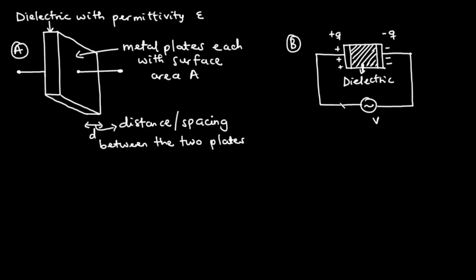In the second diagram, we have a time-variant voltage source connected across a capacitor. When a time-variant voltage is connected across a capacitor, the source voltage deposits a positive charge on one plate and a negative charge on the other plate. At this point the capacitor is said to have stored electric charge, and that stored charge Q is directly proportional to the voltage applied across it.